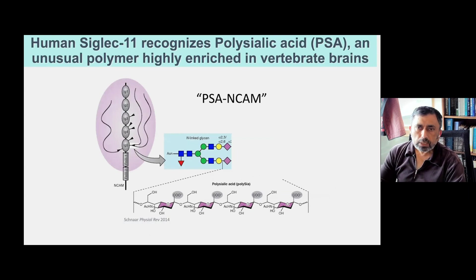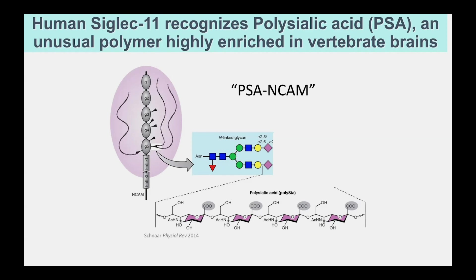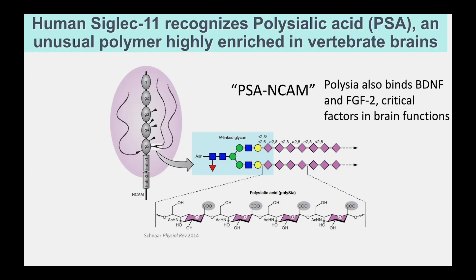The other thing about human Siglec-11 is that it recognizes something called polysialic acid. I told you about single sialic acid copies, but if you look in the brain — particularly in the vertebrate brain and the developing brain — you see extended chains of sialic acid called polysialic acid. These polysialic acids also bind molecules that recognize BDNF and FGF, which are critical factors in brain function. They're expressed on neuronal cells. The brain is particularly rich in polysialic acid in early development, before birth and soon after, and it decreases over time.